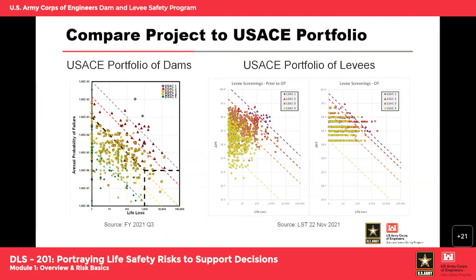Another consideration: what we're plotting is total risk, made up of components of the different failure modes. There may be a case where the total risk is more tolerable from an average annual life loss perspective if you looked at the individual failure modes rather than the total. There was also a question in the chat about whether presentations will be available — yes, they will be provided and should be loaded up to the RMC website by the end of the day today.